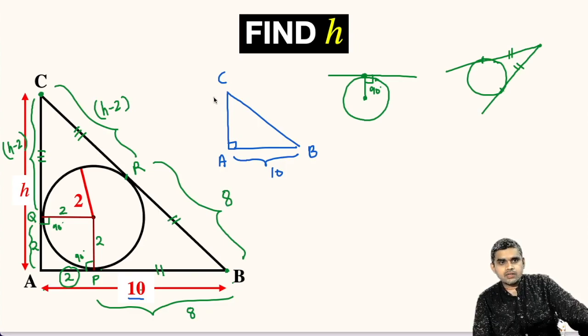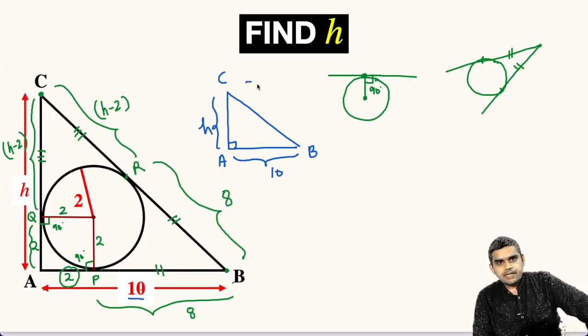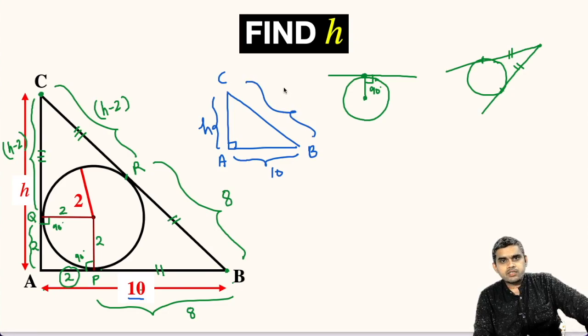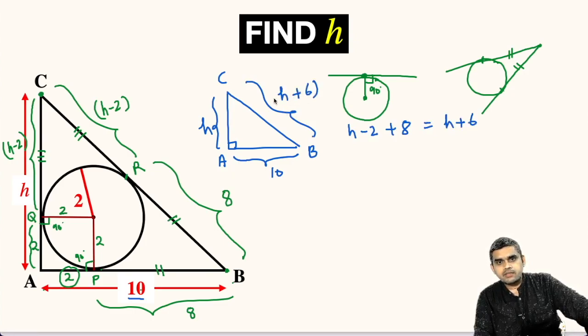AC length is given to us as H units and CB will be equal to H minus 2 plus 8 units. So, this will be equal to H plus 6 units.